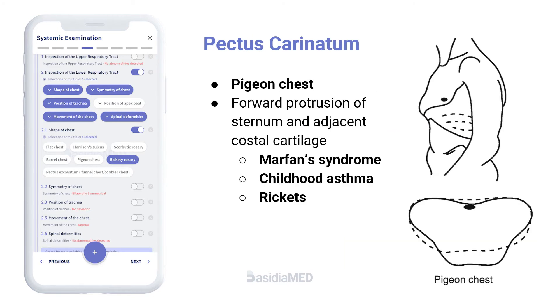Pigeon chest, also called pectus carinatum, is a forward protrusion of the sternum and adjacent costal cartilage. It is seen in Marfan syndrome, childhood asthma, and rickets.